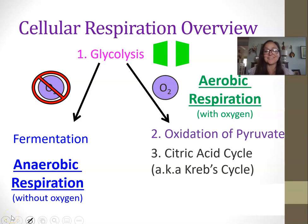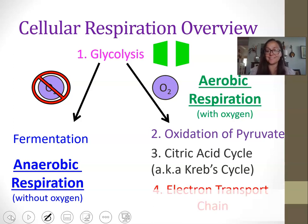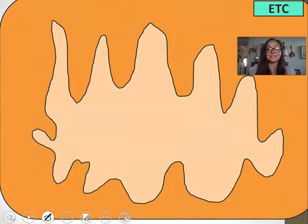Okay, so this is our third or fourth video on cellular respiration. In this one we'll be focusing on the last step of aerobic respiration, which includes the electron transport chain and chemiosmosis for oxidative phosphorylation. So let's go ahead and zoom in.